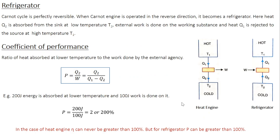In the last class, we discussed in detail about the working of a Carnot heat engine, and we saw that the Carnot cycle is a perfectly reversible cycle. In the normal course of action, in the case of a Carnot engine, heat flows from a hot object to a cold object. You absorb heat Q1 from the source at higher temperature T1, reject heat Q2 to a sink at lower temperature T2, and the working substance does some external work W.